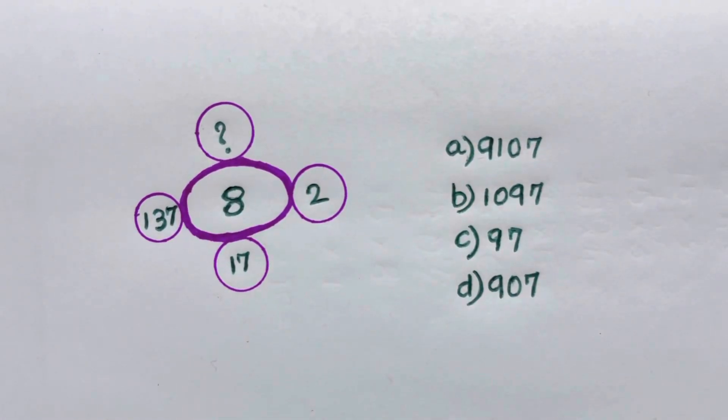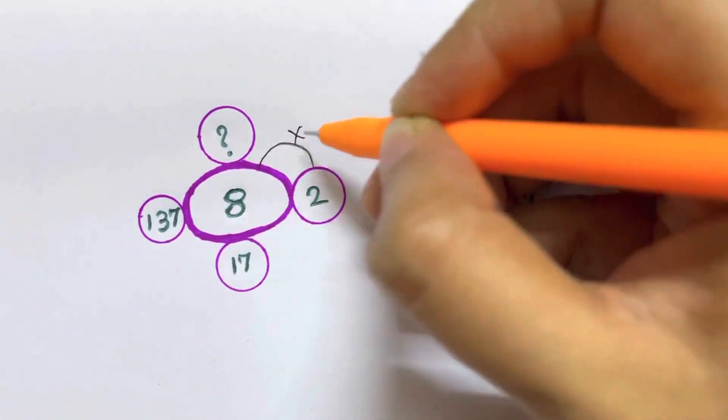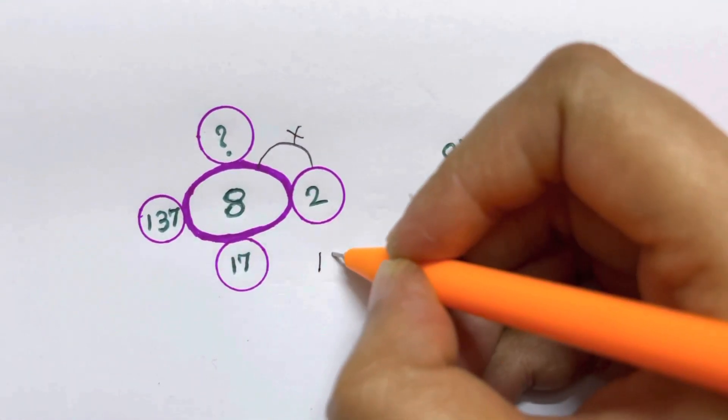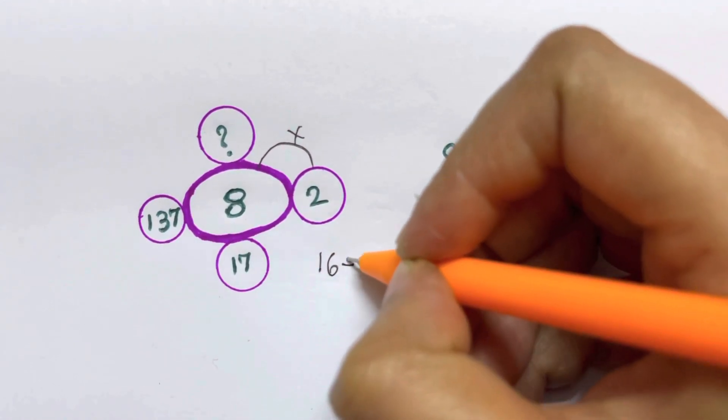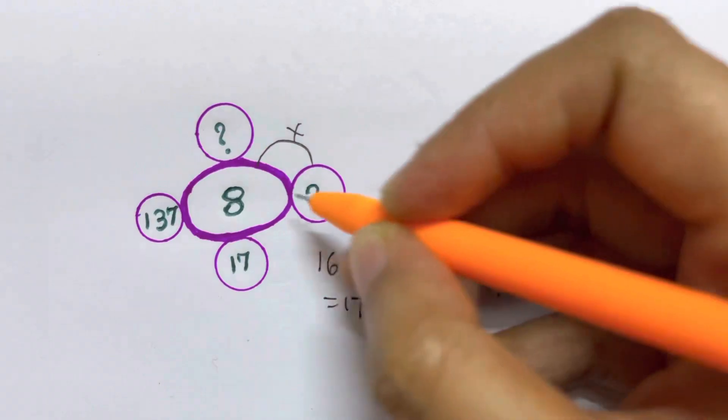I'm just going to multiply them. 2 and 8 will give me 16, and I'll just add plus 1 to get 17. So that's how I get 17, so I finished my first part.